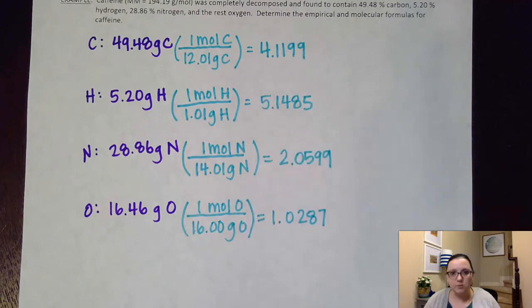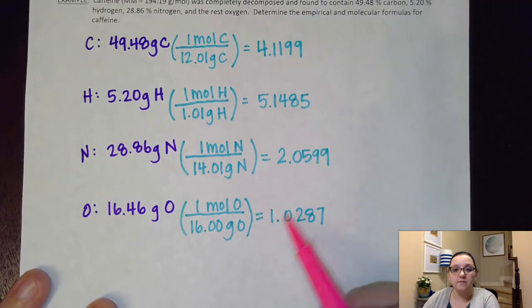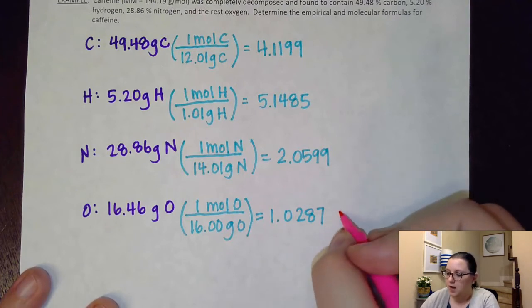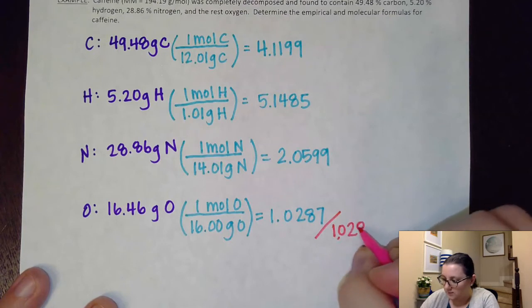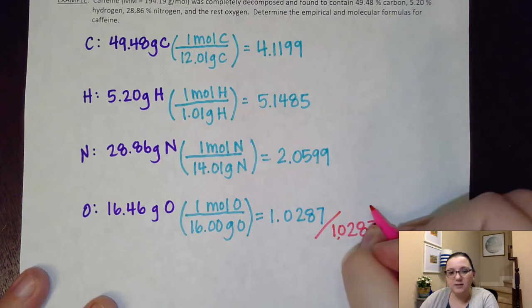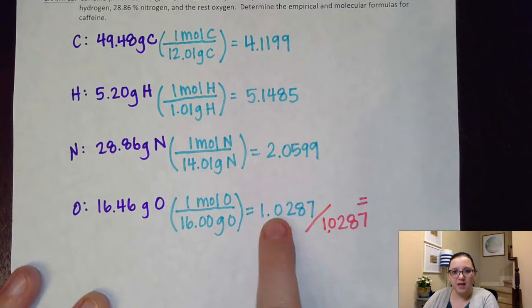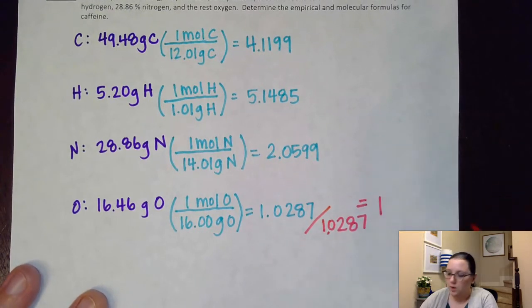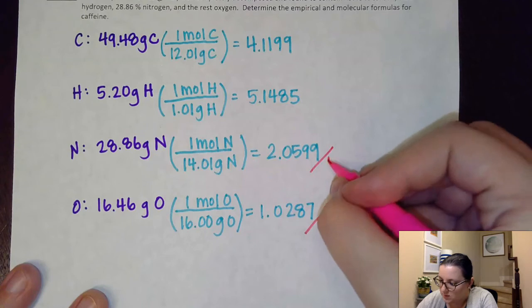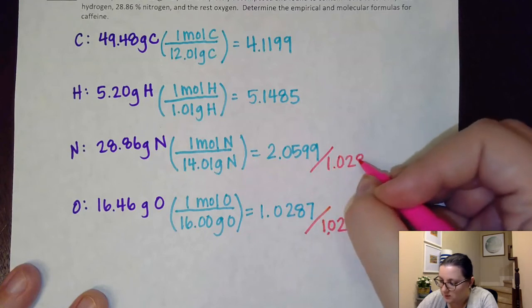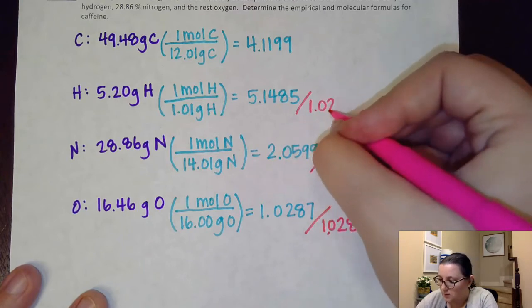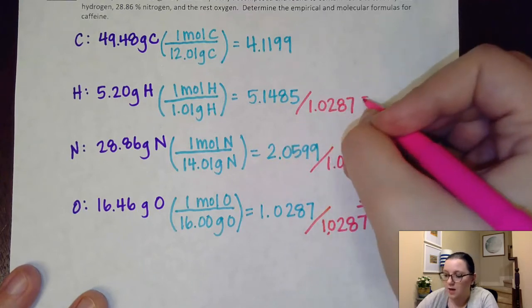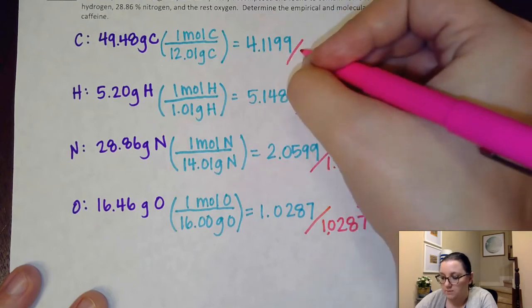So what I need to do next is to do the next step in the saying. We've done percent to mass, mass to mole. The next step is divide by smallest. So whichever number of these is the smallest, in this case the 1.0287, I'm going to divide all of these by that 1.0287. Now what that does is that ensures that this guy at least ends up being a whole number. It ends up being 1. For the rest of these, we may come out really close. It depends. If you are within hundredths of a whole number, you are allowed to round to the whole number. If you're not, then you're going to need to leave the fraction and you may need the last step of multiplying it to a whole.